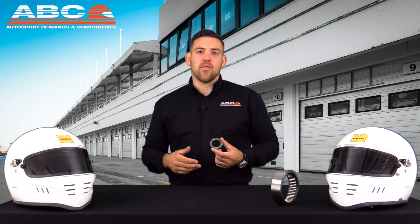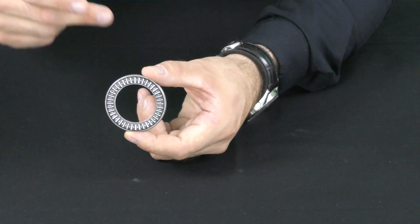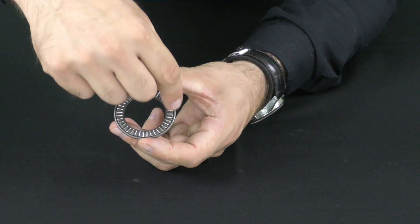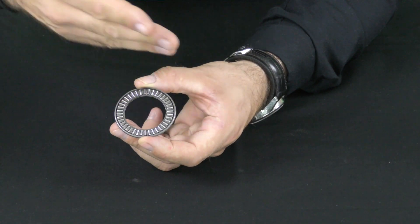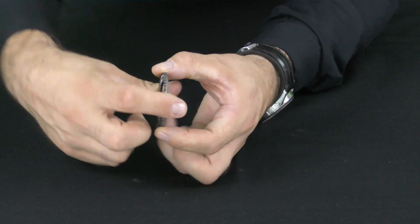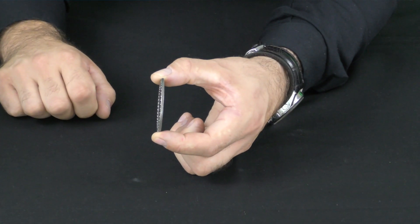The last type that we're going to give you a brief overview on is the axial or thrust cage guided needle roller bearing. If we look at it on a close up you can see that the needles themselves are orientated at 90 degrees and this means that they can support loads axially at the end of the shaft.